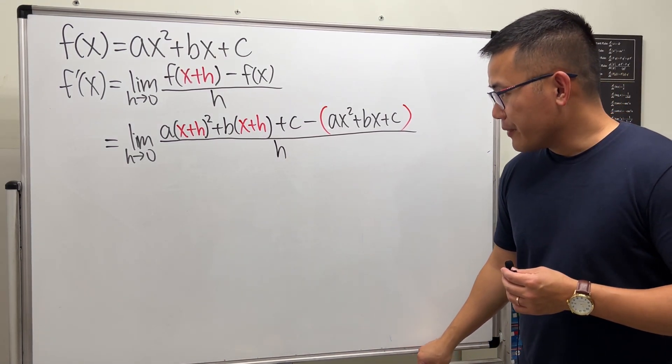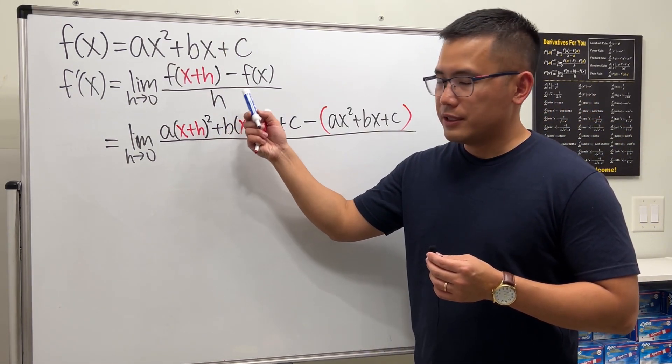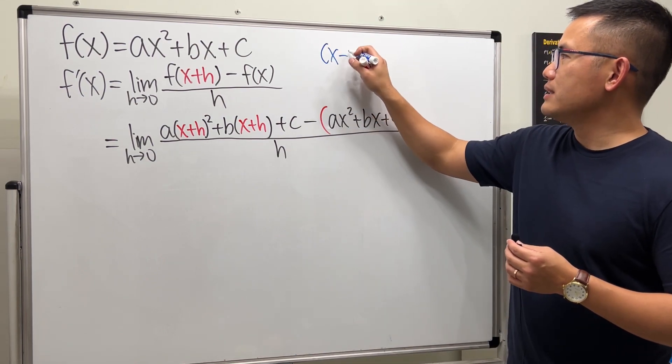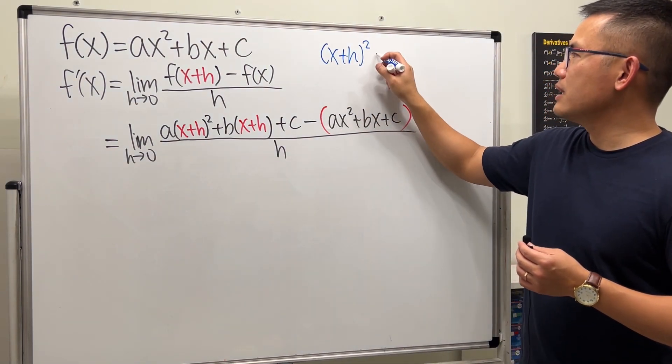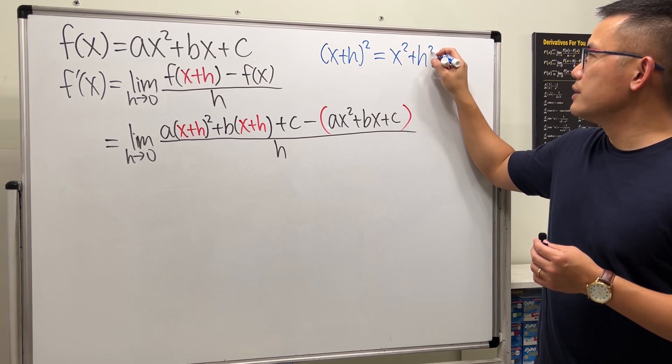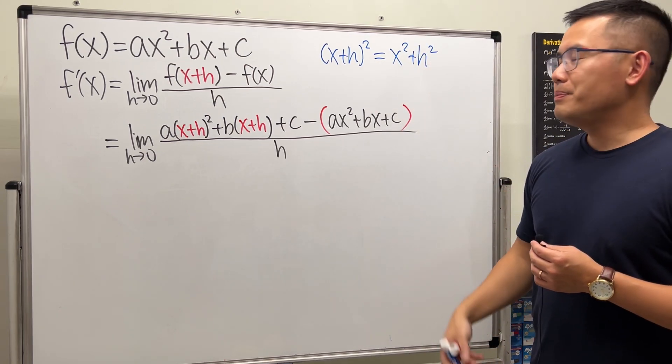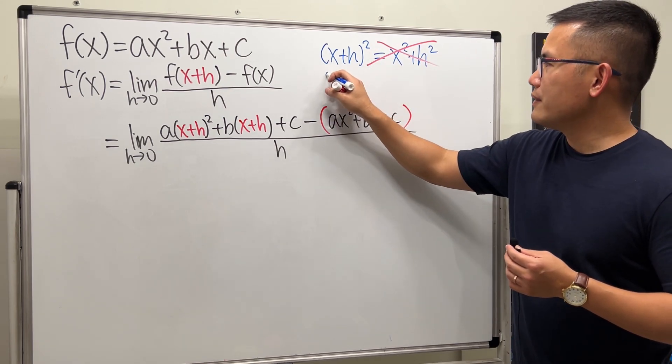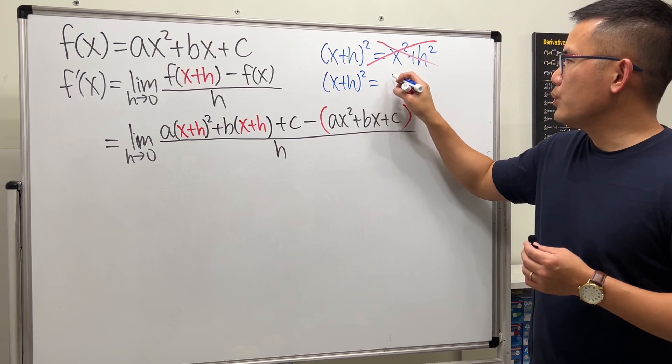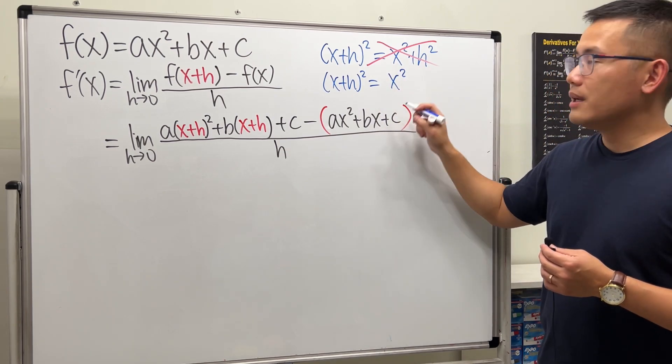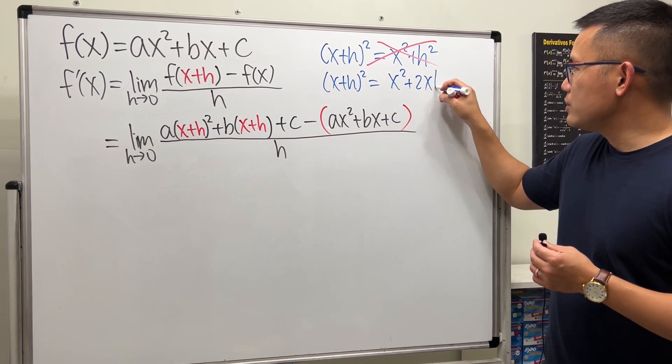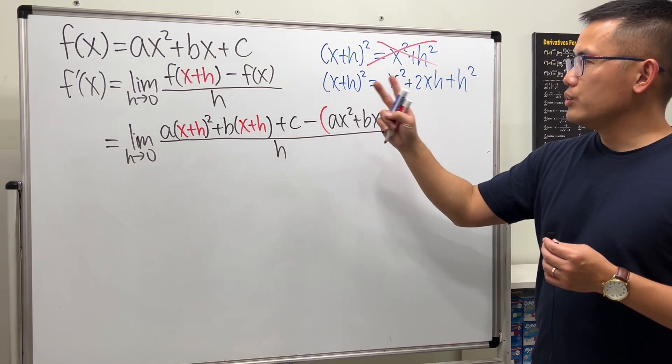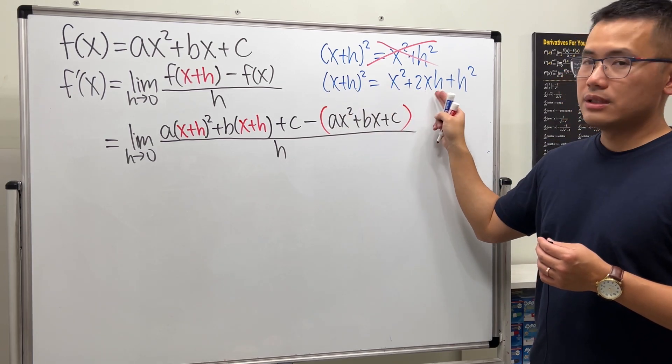So here's the deal. x plus h squared, this is an extremely common mistake. A lot of students, even in calculus, they will say this is equal to x squared plus h squared. Because it's convenient. No, this is wrong. When we have x plus h squared, this equals x squared plus 2xh plus h squared. Because you have to add 2 times x and h. So this middle part.